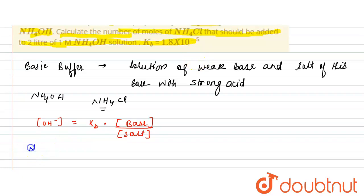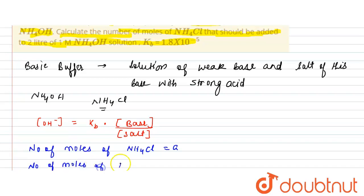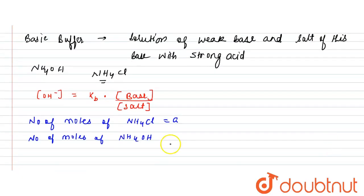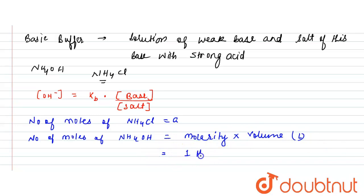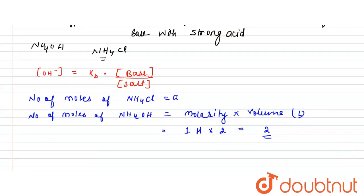Now let's calculate the number of moles of NH4OH. Number of moles = molarity × volume in liters. The molarity is given as 1 molar and the volume is 2 liters, so the number of moles of NH4OH is 2.